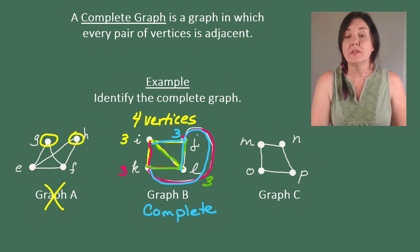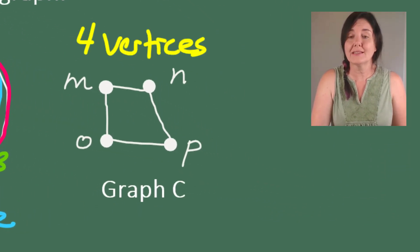Now let's look at graph C. Notice that even though there are four vertices again, vertex N only has degree two. So it can't possibly be a complete graph.